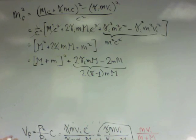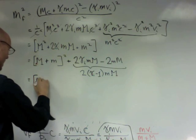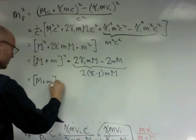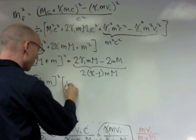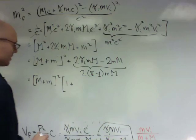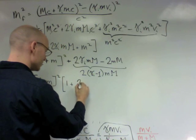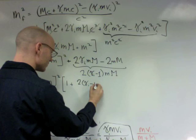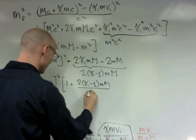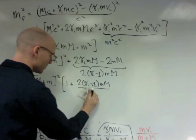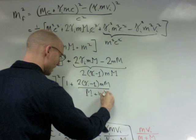Non-relativistic. I'm now going to write this as m plus m squared times 1 plus, this is the 1, plus, I'm going to make this part dimensionless, 2 gamma i minus 1 m m over m over m plus m squared.